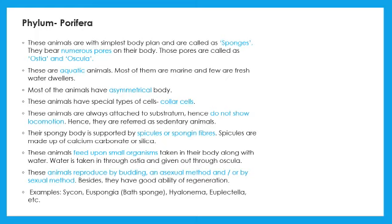Phylum Porifera — they are called sponges. These are multicellular, asymmetric, aquatic organisms without cell wall and without body cavity. Their body is porous; pores are called ostia and oscula. Water is taken through the ostia and given out through the osculum. Since they are attached to a substratum, they cannot leave their place.